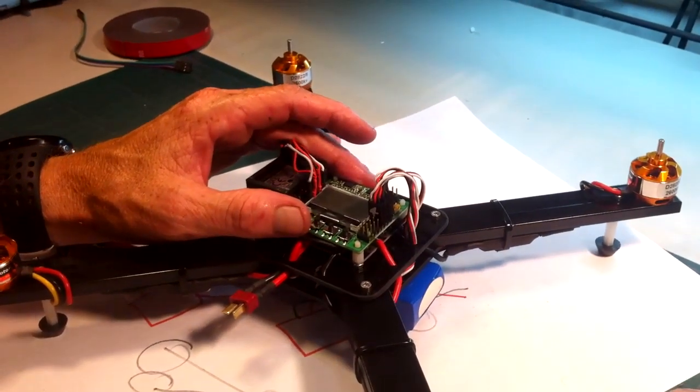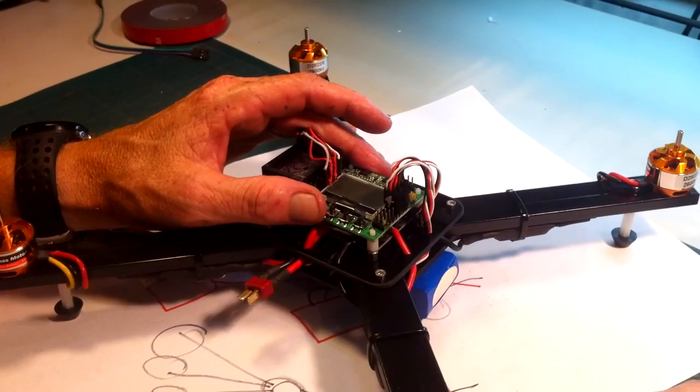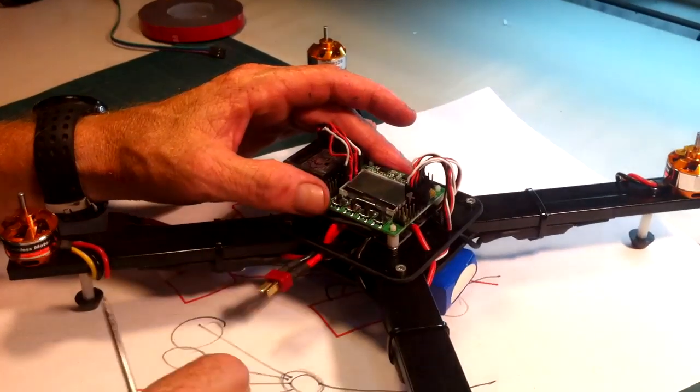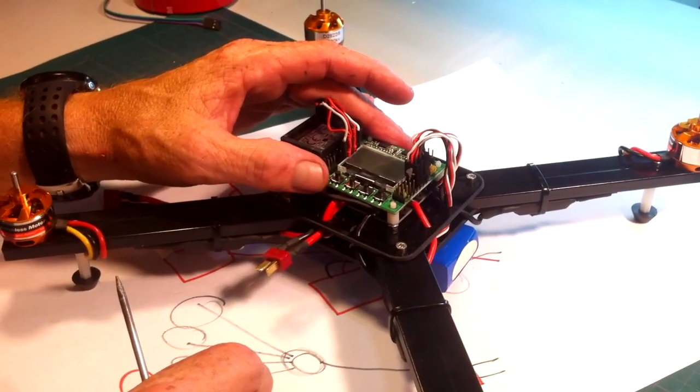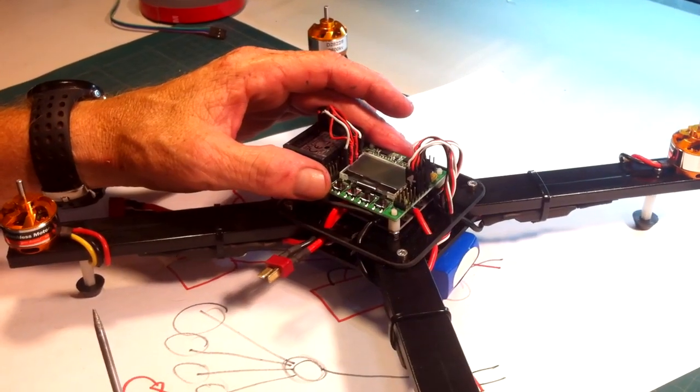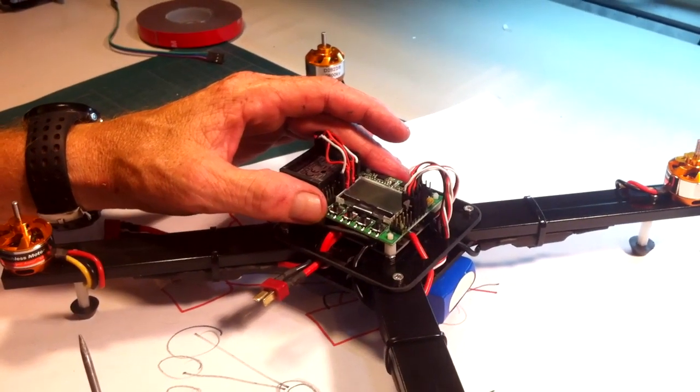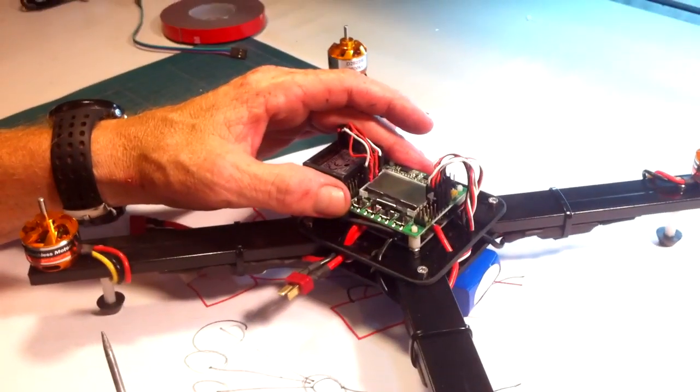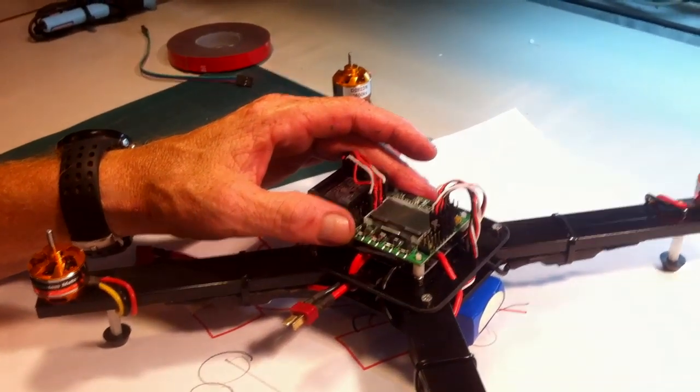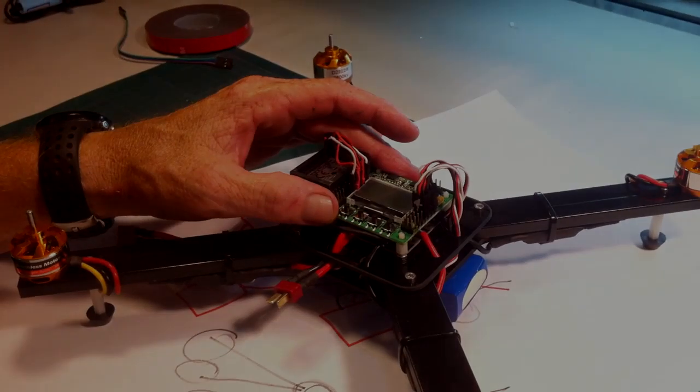So that's all we got left to do now: check motor rotation, calibrate the ESCs, and then from there I'm going to show you a little bit about the KK2 board settings you want to have in there for it to fly well for you. Then we're going to put propellers on there and go for a test flight. So stay tuned for the next video.